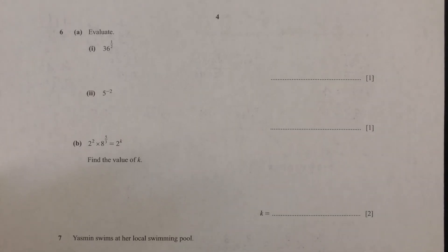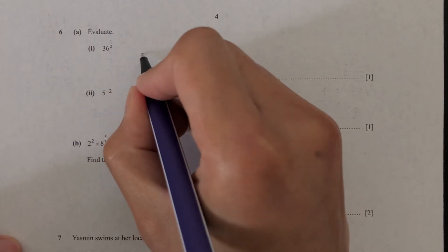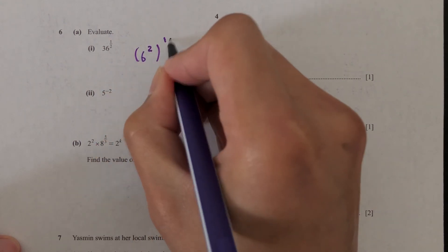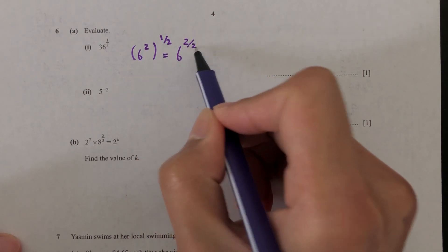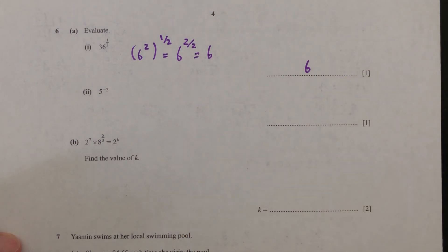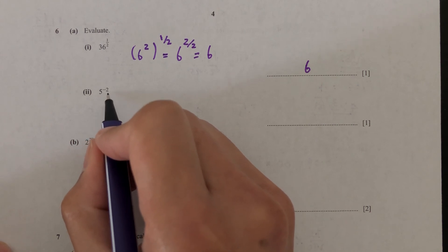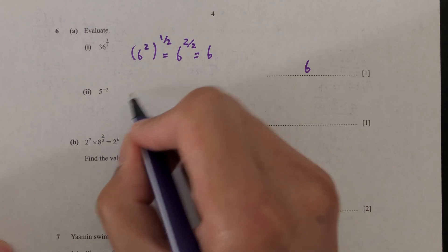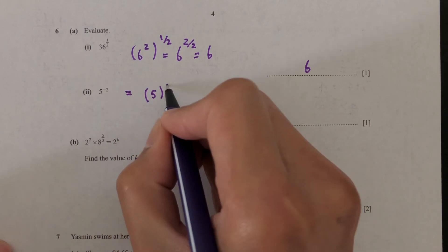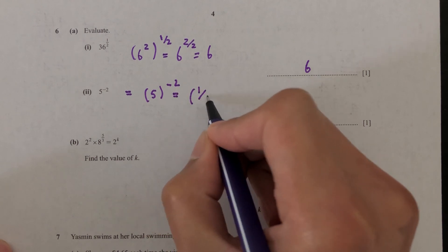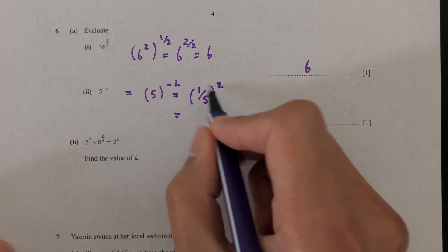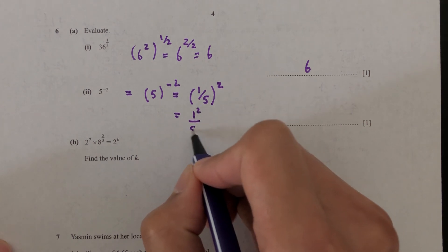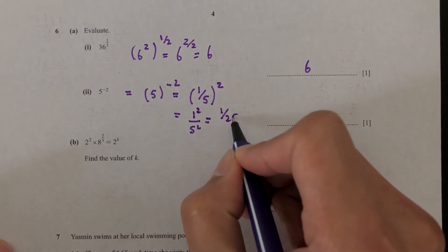Question number 6, part A: evaluate 36 to the power of a half. We know 36 is 6 squared, so 36 to the half is 6 squared to the half, which is 6 to the power of 1, so the answer is 6. For 5 to the power of minus 2, we flip it: it becomes 1 over 5 squared, which is 1 over 25.